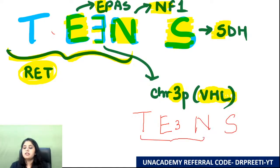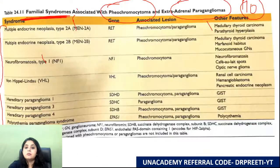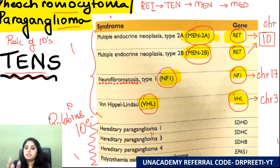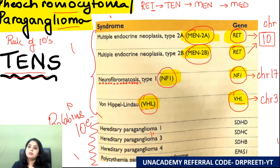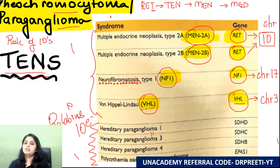To summarize the pheochromocytoma table using TENS: 10 = RET, E = EPAS1, 3 = VHL, N = NF1, S = succinate dehydrogenase. The hereditary paraganglioma update is expected in exams. Revise these PDFs two days before your exam — these are high-yield tables.